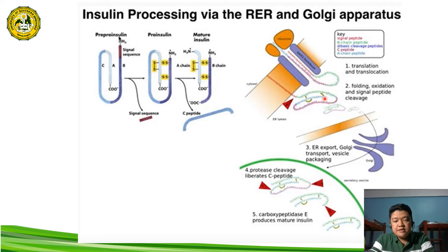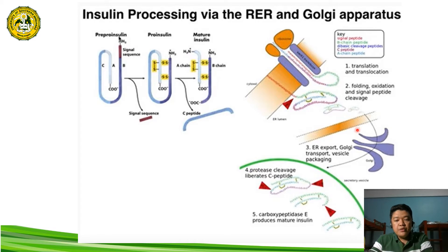Once inside the lumen of the ER, the preproinsulin will undergo different processes. It will undergo folding, since it is a protein. After folding, there is also the process of oxidation and signal peptide cleavage. The signal peptide is a region of the protein that signals it to go into the ER. This signal peptide is contained within the preproinsulin, particularly at the B chain, and it directs the protein to go to the ER in order to be converted into proinsulin.